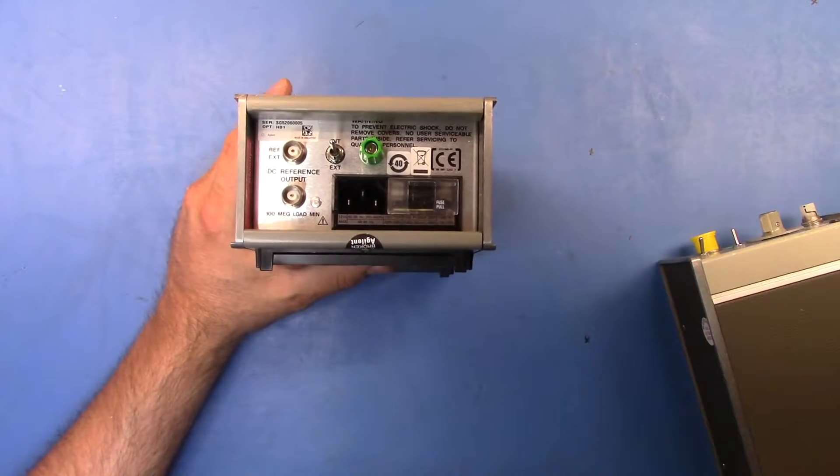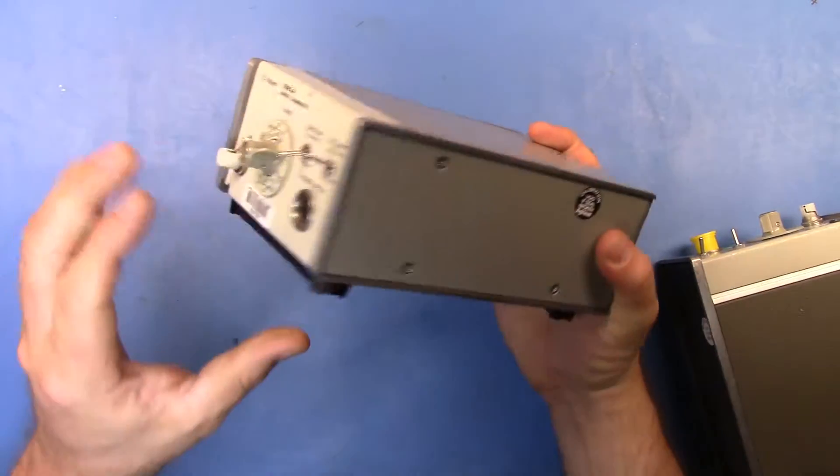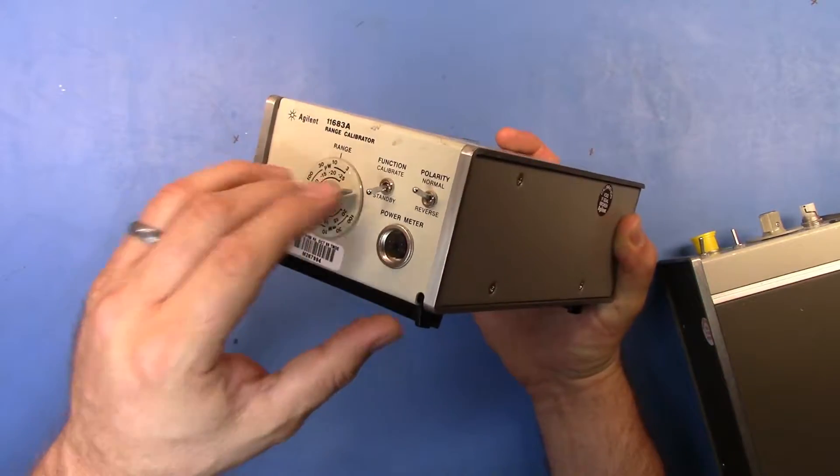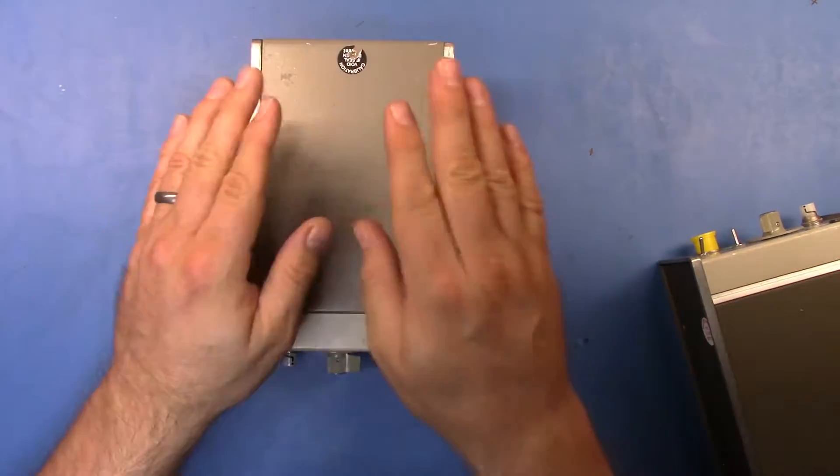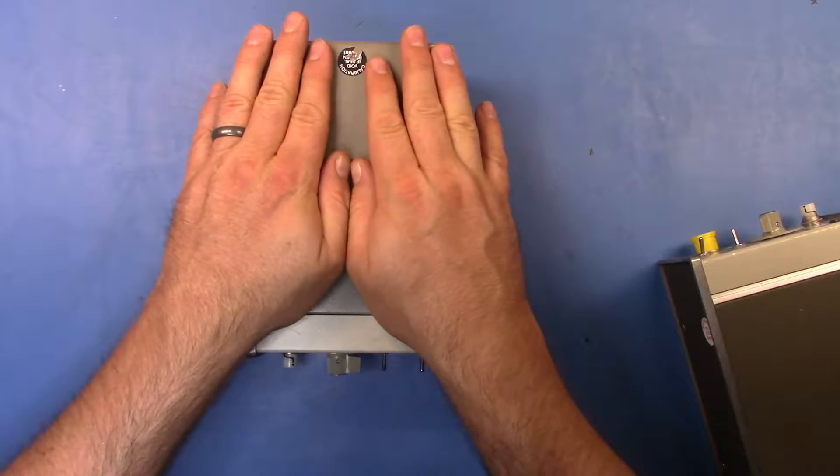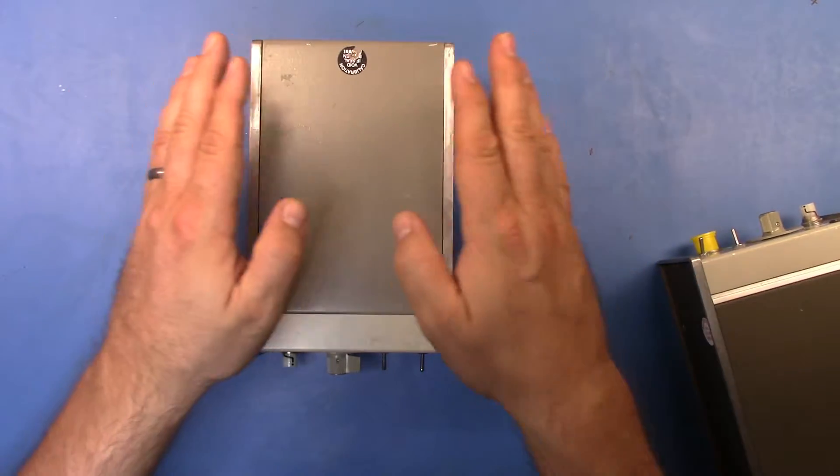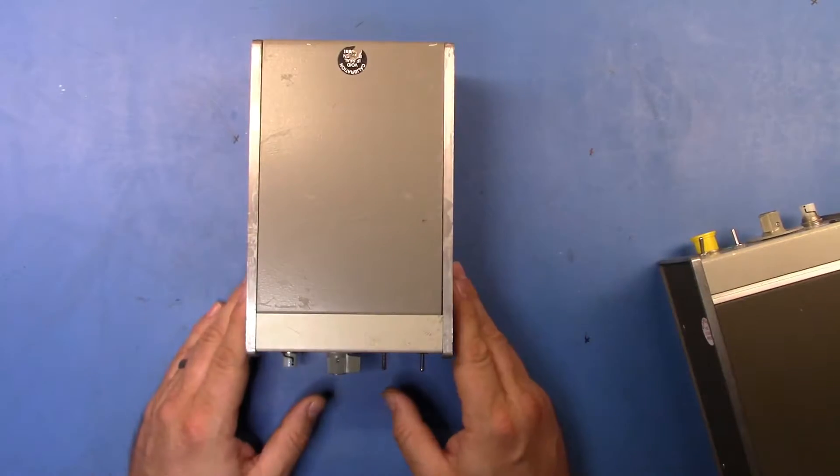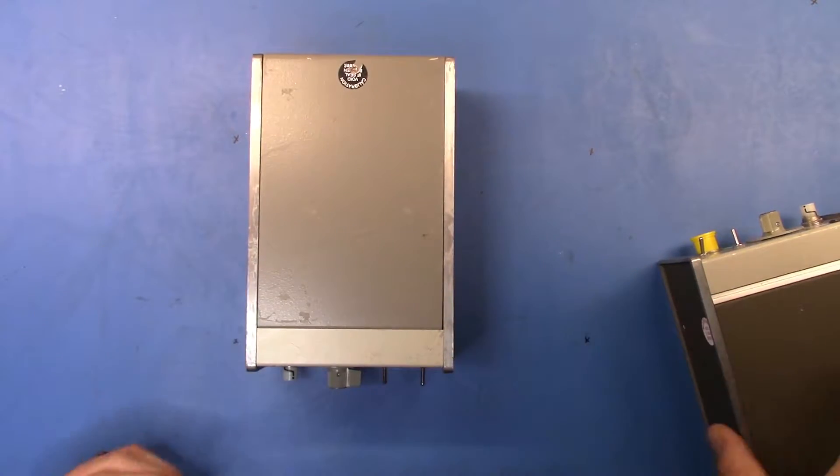So what you use is use option H01 and you take your DC calibrator or you take a calibrated accurate voltage source and you feed that in and you use that as the actual voltage source that goes into the divider that will then create the voltages that come out and enable you to achieve higher accuracy.